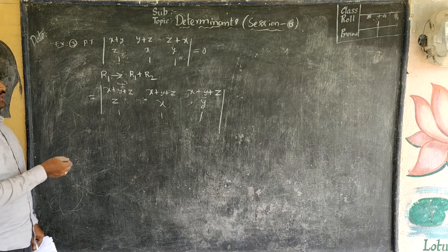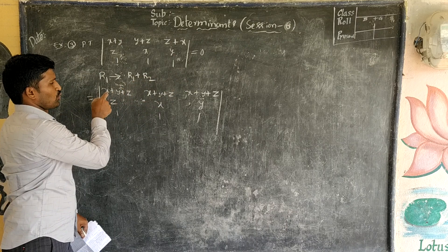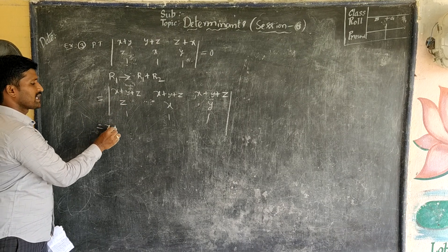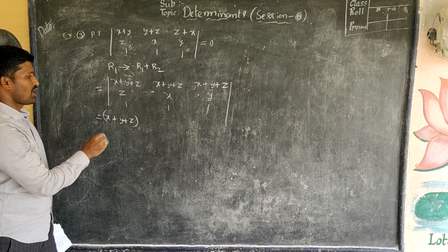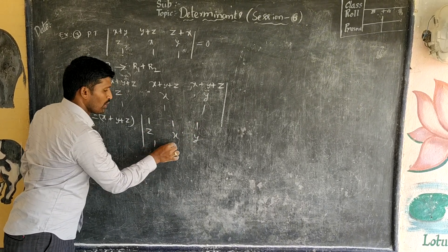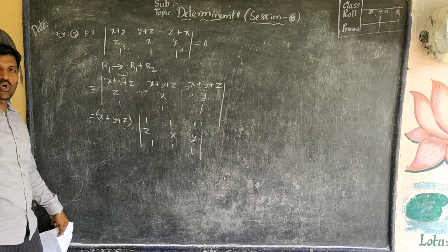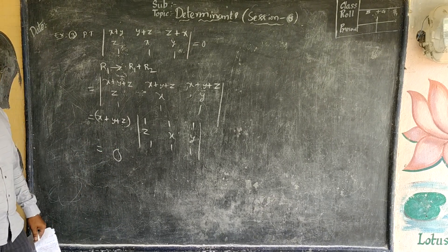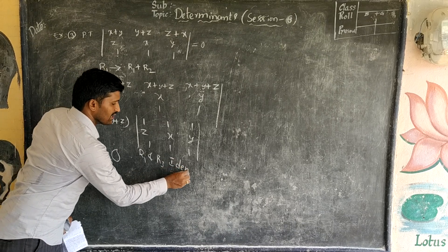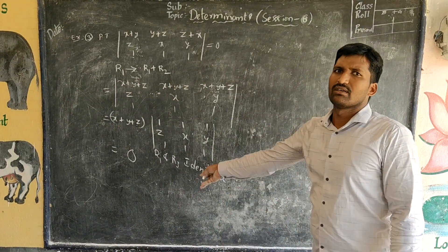As per the property, we can take out the common factor. Every element in row 1 is x+y+z. So we take x+y+z common, leaving 1, 1, 1 in row 1. Now R1 and R3 are identical — both are (1, 1, 1). When 2 rows or 2 columns are identical, the value of the determinant is clearly zero. Reason: R1 and R3 are identical.